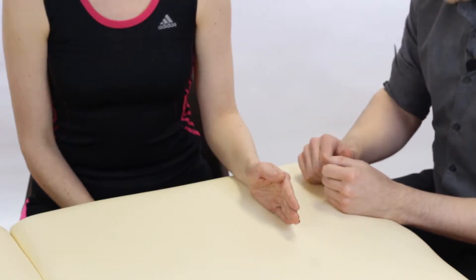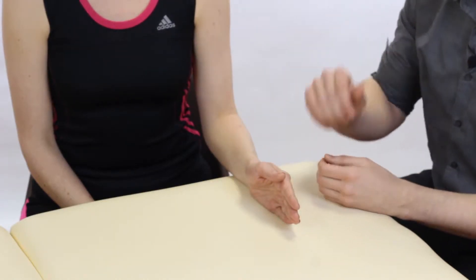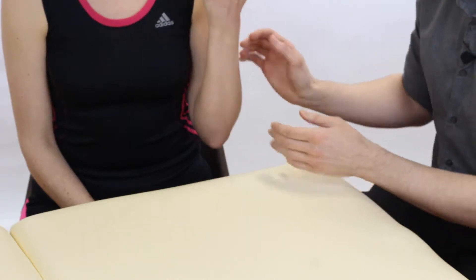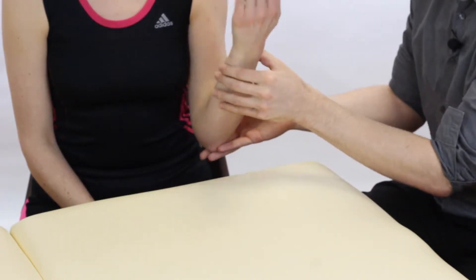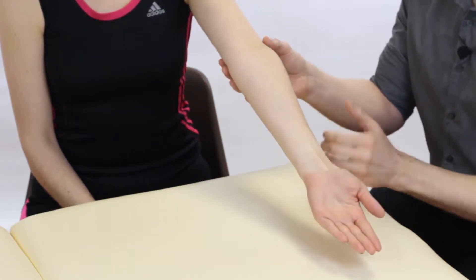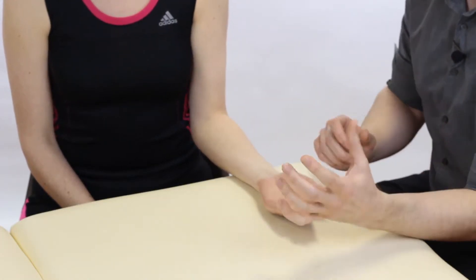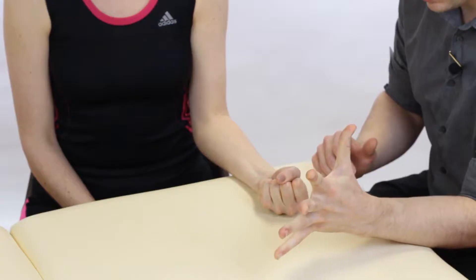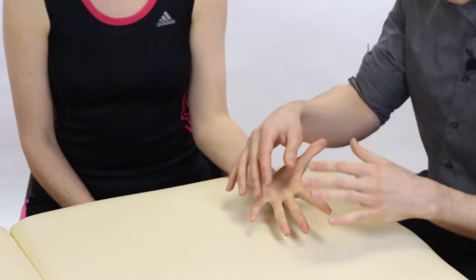We're also going to do the joints above and below so we're going to ask them to bring their elbow up into flexion, a bit of overpressure, and if I can just ask you to make a fist and open your fingers so we can loosely clear those.